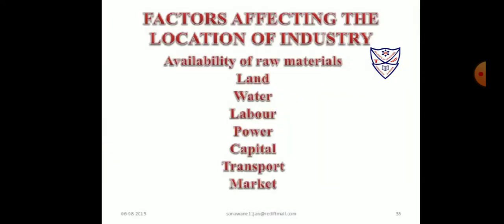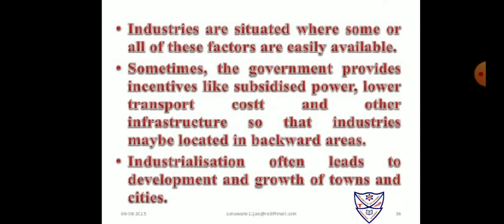Factors affecting the location of industry include availability of raw material, land, water, labor, power, capital, transport, and market. A place where few or all of these factors are easily found is where industries are usually established. Raw material, labor, water, land, market, capital, power, and transport are the important factors that affect an industry's location.